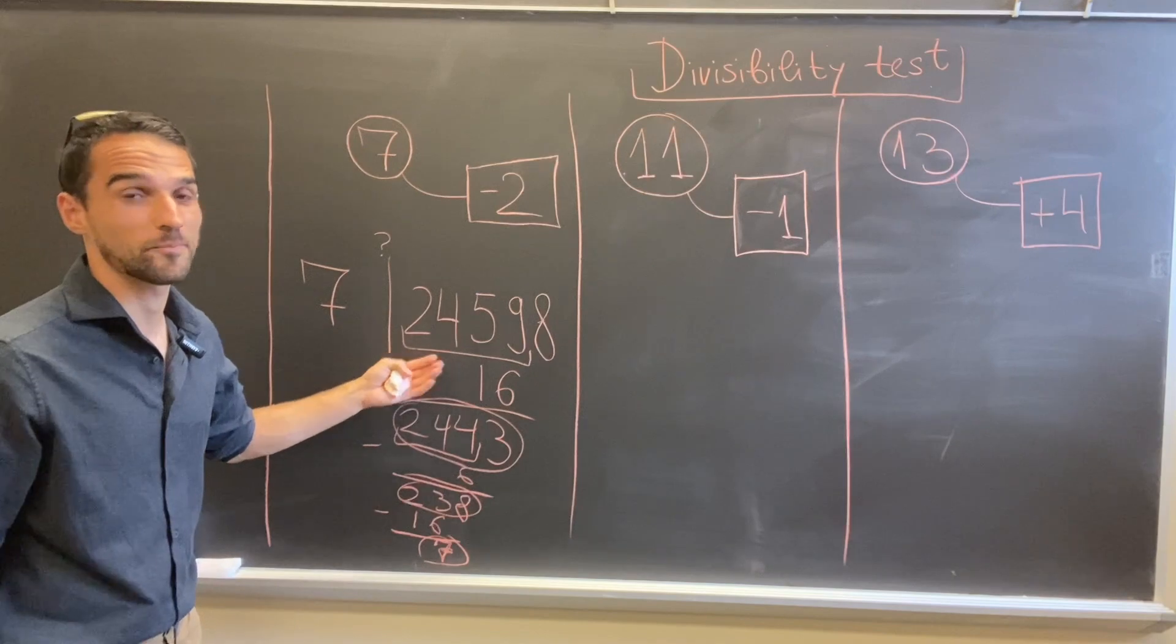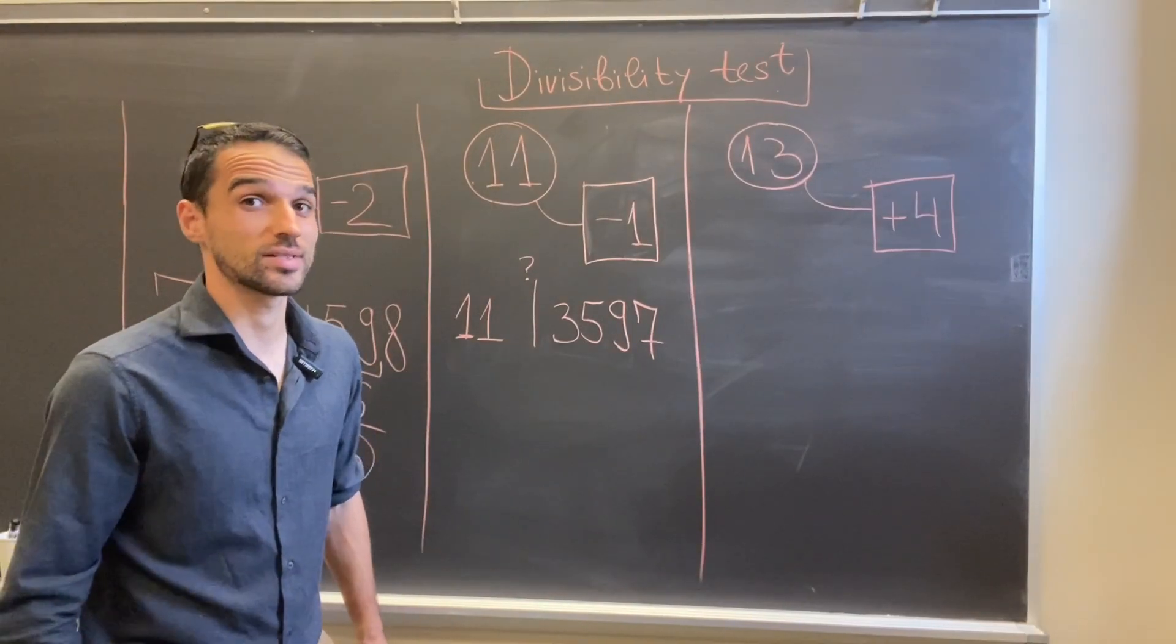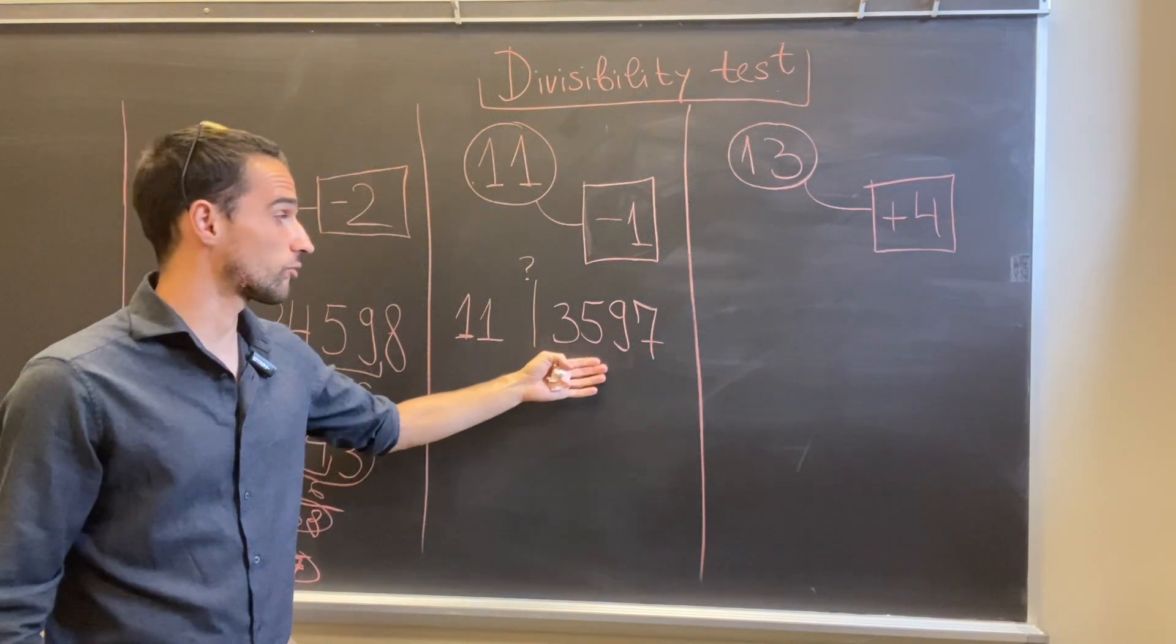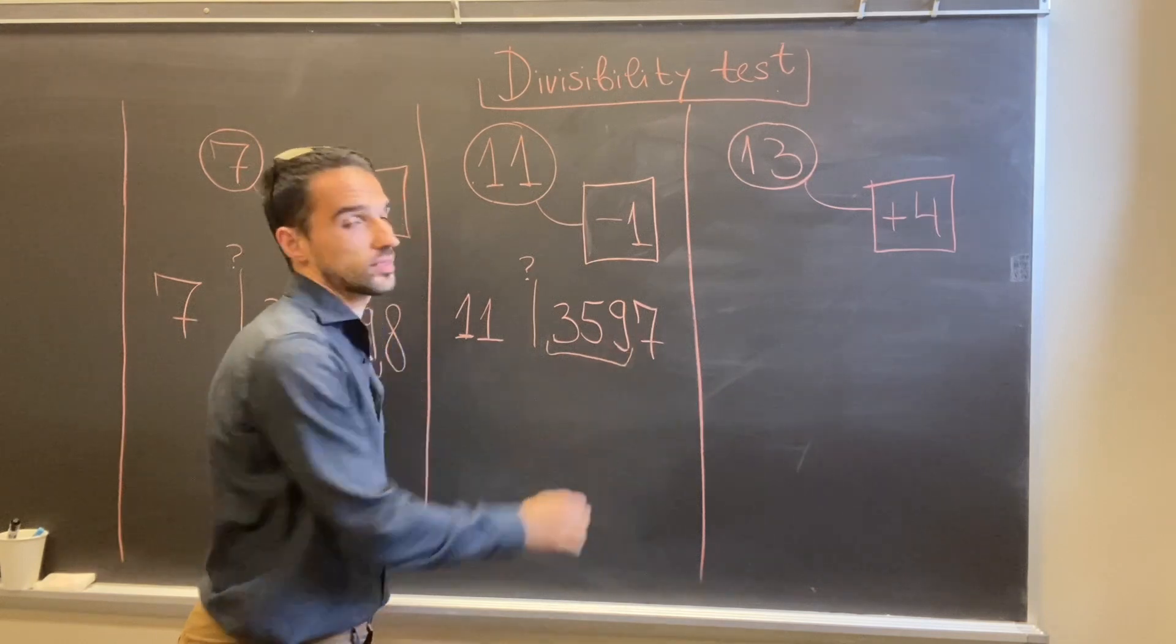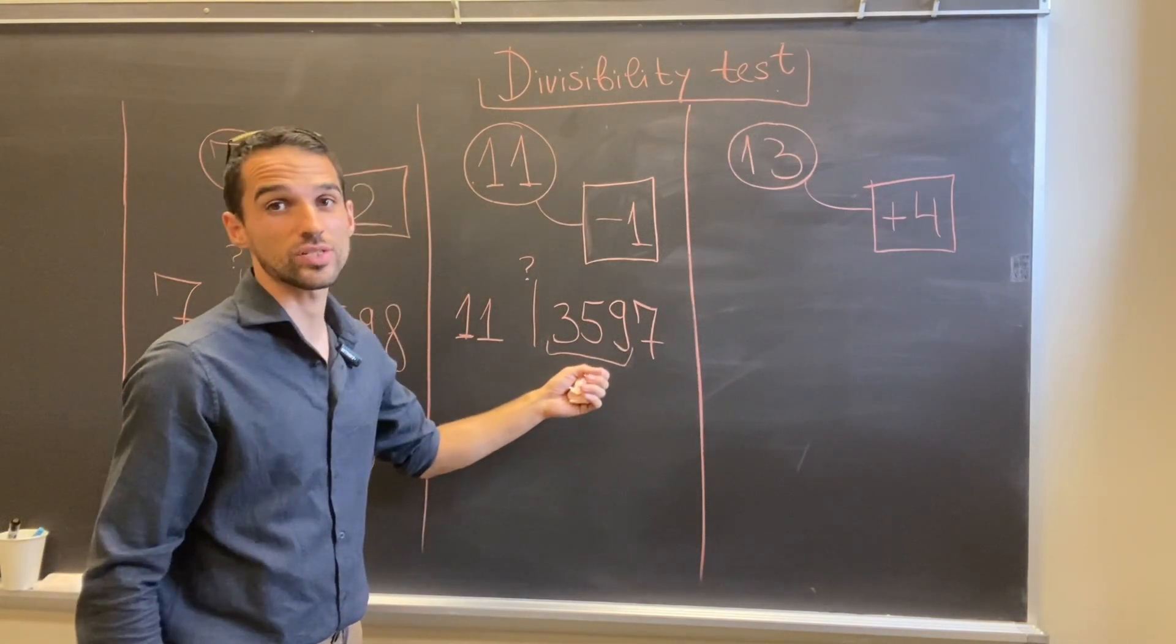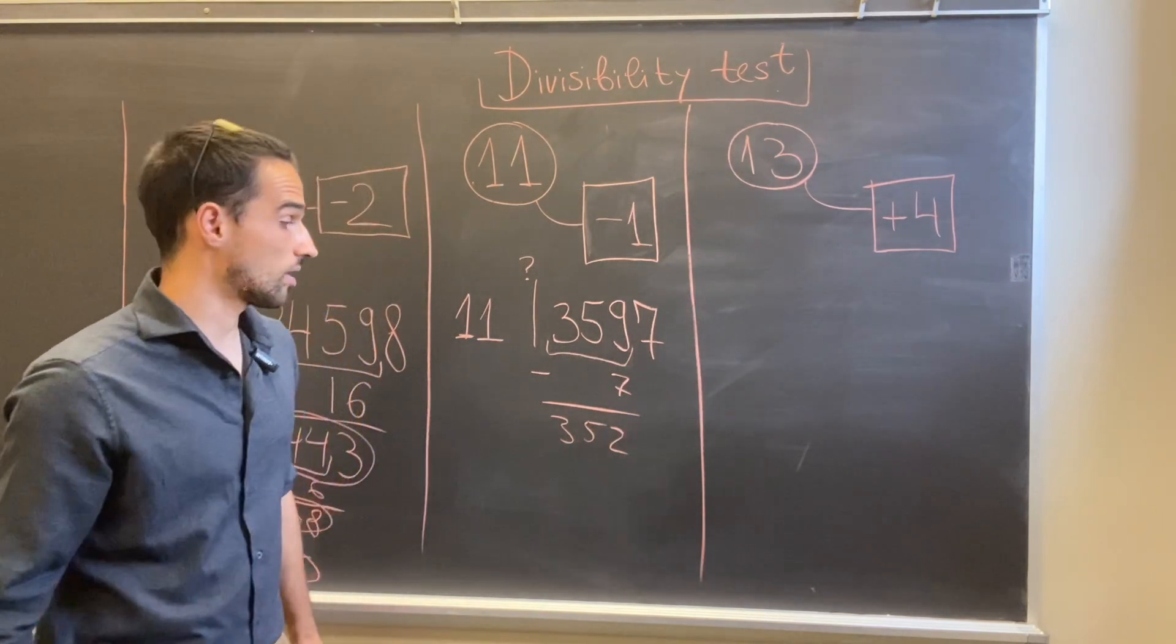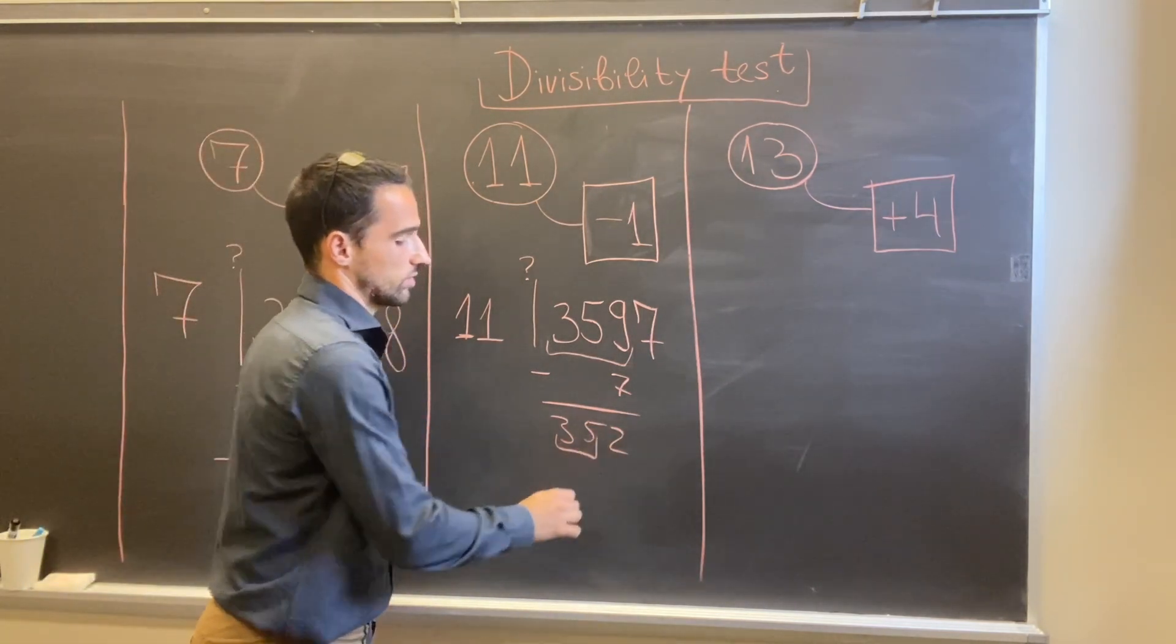How about divisibility by 11? Well, in the same way, but now the magical constant is negative 1. Let's see how we'll proceed if we want to test this number for divisibility by 11. Again we take the number without its last digit, and in this case we will just subtract this last digit, so subtract 7 and I get 352.